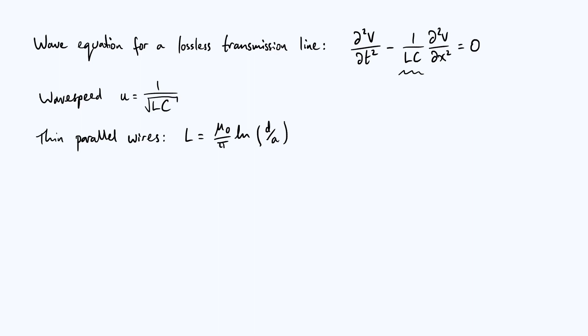And the other thing that we derived before was the capacitance per unit length which is πε₀ over the natural log of d over a, where d and a have the same meanings.